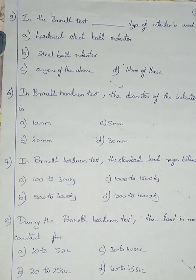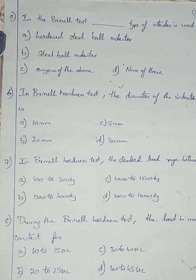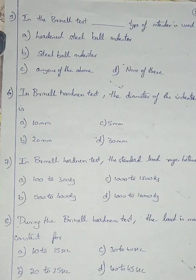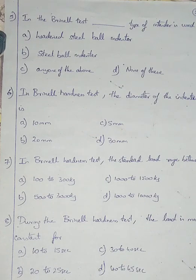Question number 5. In the Brinell test, what type of indenter is used? Option A: hardened steel ball indenter. Option B: steel ball indenter. Option C: any one of the above. Option D: none of these. You may think about the difference between hardened steel ball and just a steel ball indenter. In a Brinell hardness tester, we use a hardened — that is heat treated — steel ball. So I am going with option A, hardened steel ball indenter.